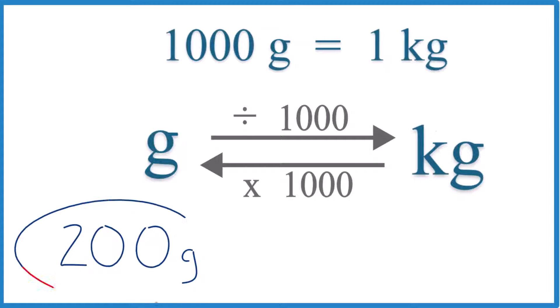If you need to convert 200 grams to kilograms, here's how you do it. First off, you need to memorize that there are 1,000 grams in one kilogram. This is our conversion factor.